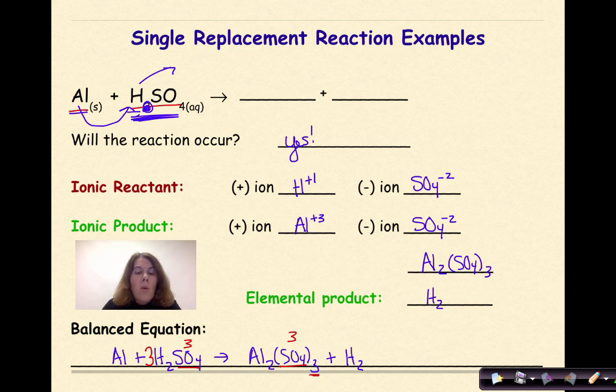Now let's look at the hydrogen. We have six hydrogens on the reactant side. I need to get six hydrogens on my product side. I'm going to put a three in front of the H2. Now the H's are balanced.